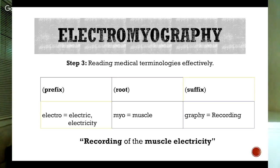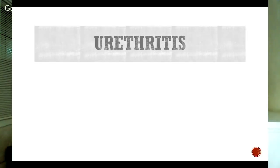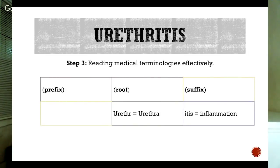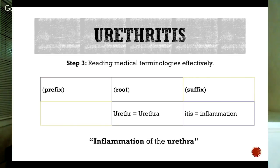Let's go to the next example: urethritis, which really only has two parts — root: ureth, suffix: itis. Ureth meaning urethra, itis meaning inflammation. If we read right to left, we gather the meaning as inflammation of the urethra. See how that works?